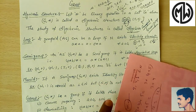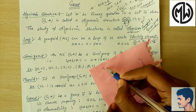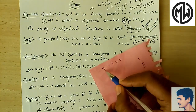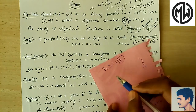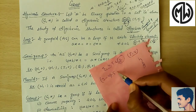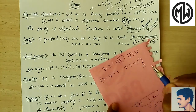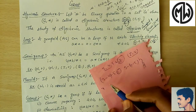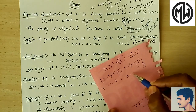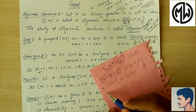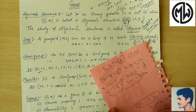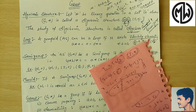But (Z, −) is not a semi-group. Let's check: assume 3, 4, and 5 belong to Z. Now (3 − 4) − 5: first 3 − 4 = −1, then −1 − 5 = −6. And 3 − (4 − 5): first 4 − 5 = −1, then 3 − (−1) = 3 + 1 = 4. So −6 ≠ 4 — these are not equal. That means associative property does not hold for the minus binary operation on Z, so it is not a semi-group.